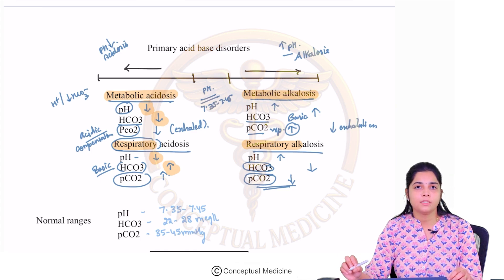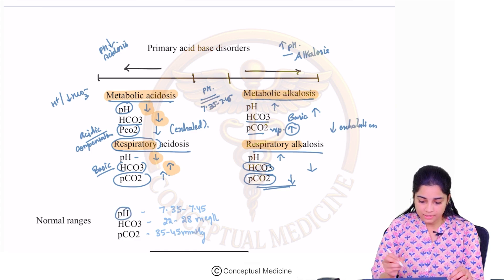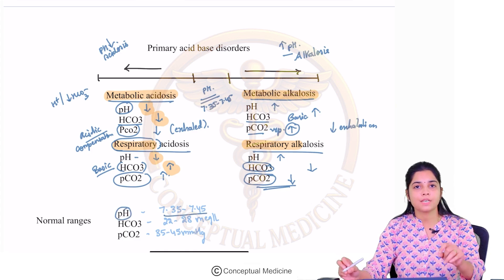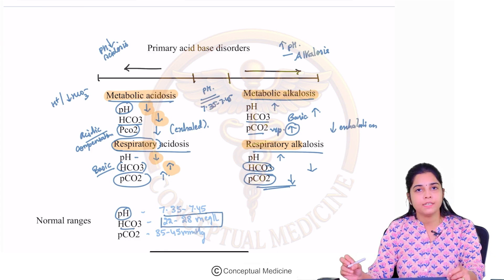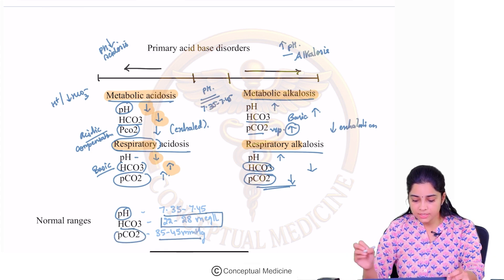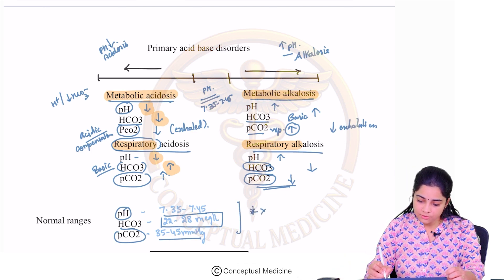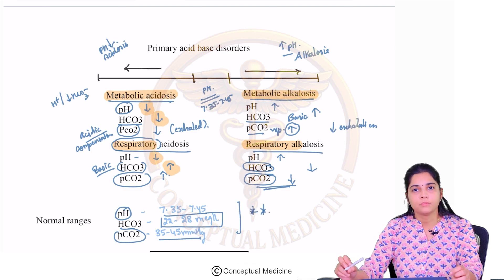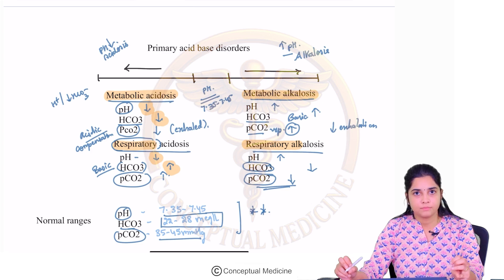Now let us look at the normal ranges. The normal pH is from 7.35 to 7.45. The normal bicarbonate level is between 22 to 28 milliequivalents per litre. The normal PCO2 levels in the body are 35 to 45 millimetres of mercury. Always remember these golden normal values.